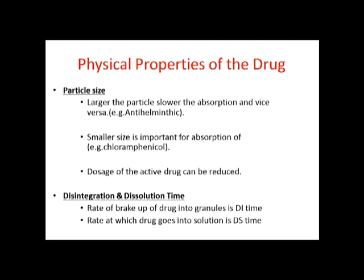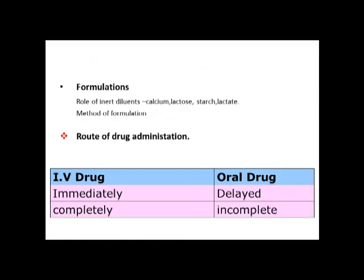Concentration: as seen with passive and facilitated diffusion, higher concentration on one side drives greater transfer of molecules across the membrane. Particle size also matters — large particles show slower absorption; smaller particles are absorbed more readily. Optimum drug molecule size is important for efficient transport across membranes.